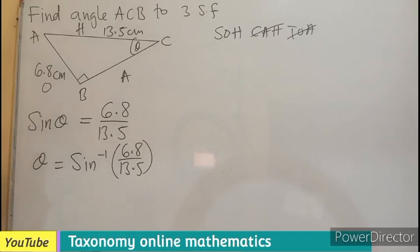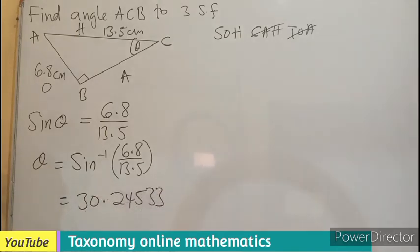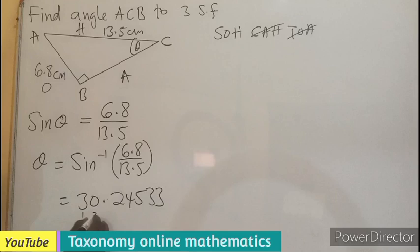So on your calculator, that will give us 30.24533. By listening to the question, we are looking for 3 significant figures: 1, 2, 3.